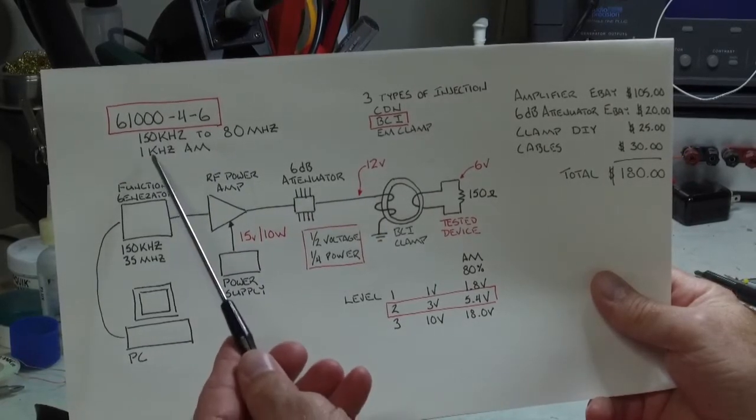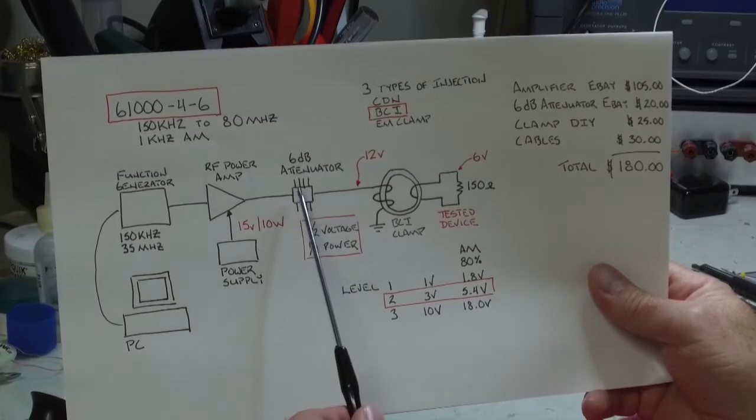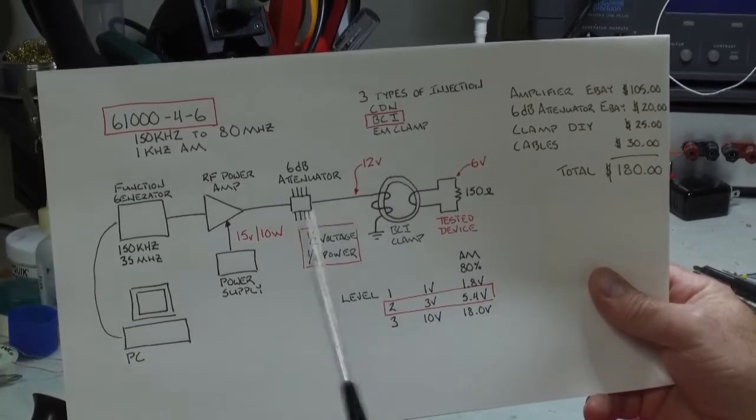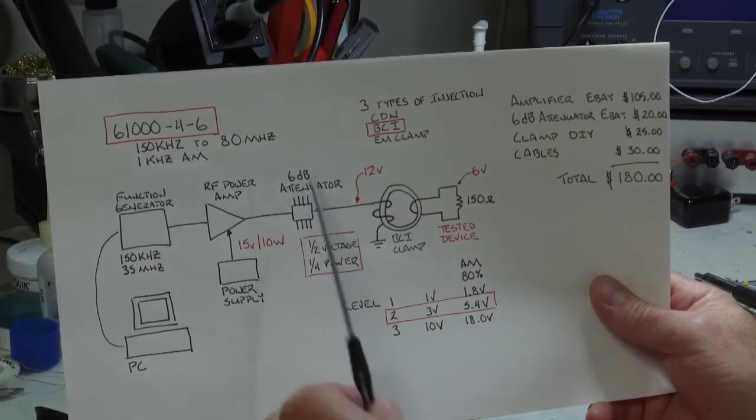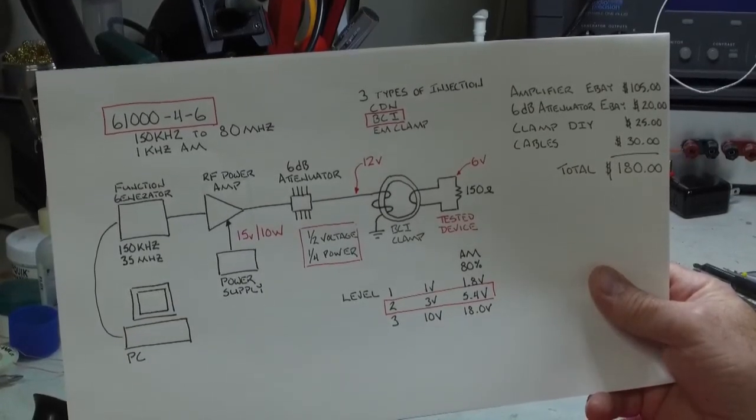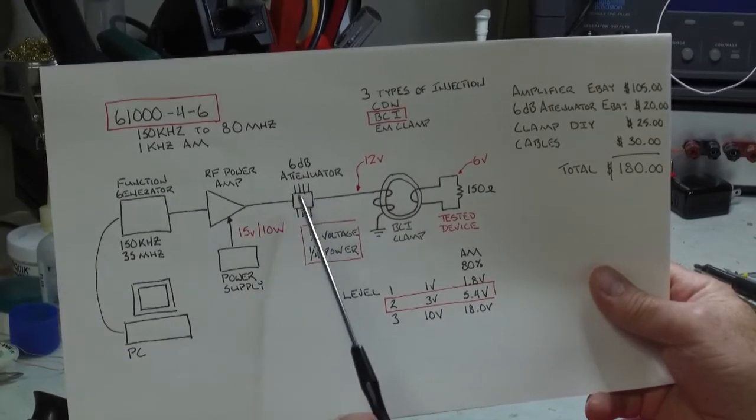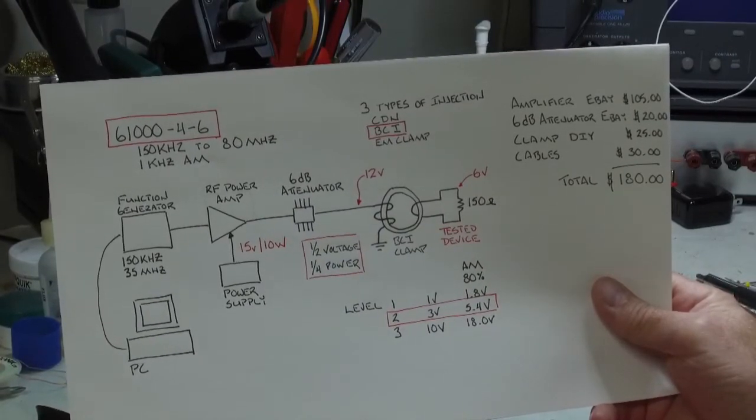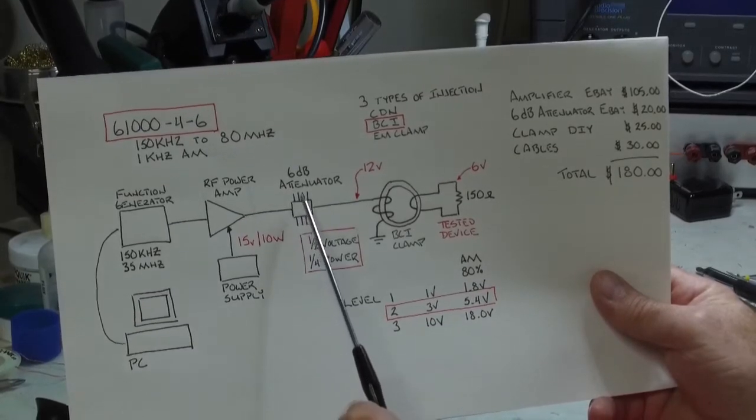It also needs to be able to modulate the signal at 1 kilohertz with AM modulation. There needs to be a power amplifier and then the specification notes that you must have a 6 dB attenuator in line before you drive your coupling clamp. This is a critical piece of the system and stabilizes the output of the power amplifier, presents a more stable impedance to the amplifier. However, it is a 6 dB attenuator so your voltage coming out of here going to your clamp will be half the voltage, or if you're thinking of power, your amplifier has to be 4x the power when this guy goes in circuit.